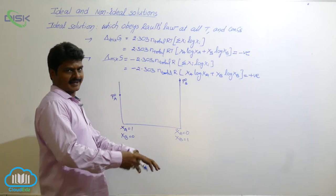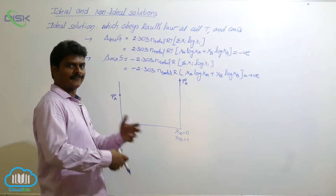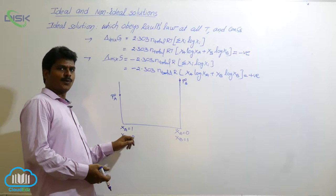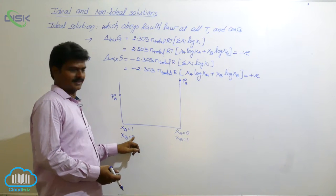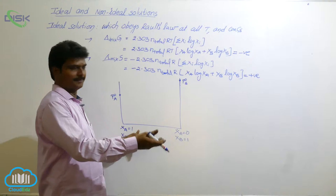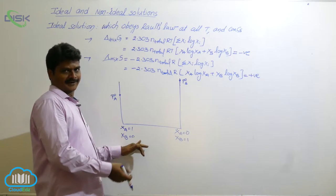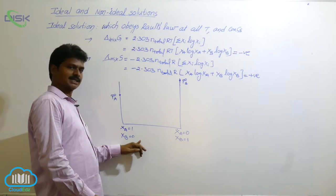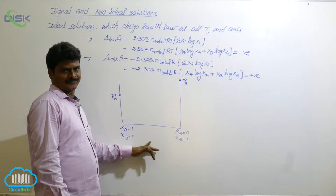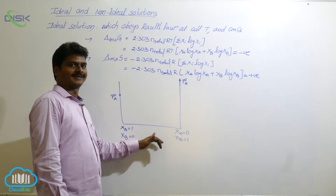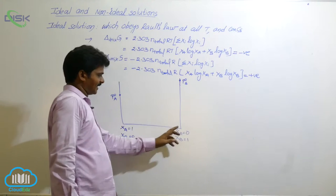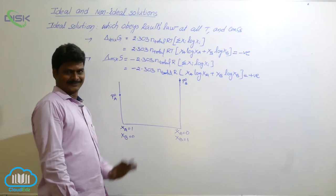We are taking A and B in different proportions. Initially, the first sample is 1 and 0. In the second sample, 0.9 and 0.1. In the third sample, 0.8. In the fourth sample, 0.7. If you continue in that way, at the other end it will be only B.